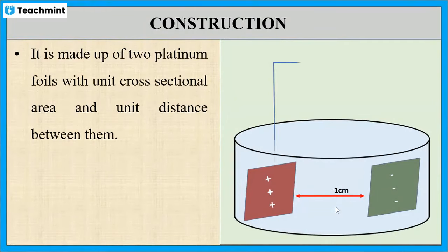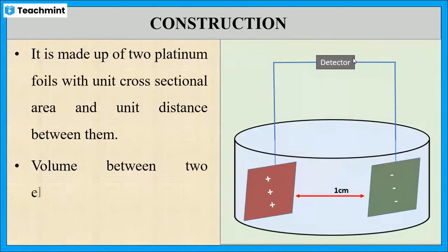These two platinum plates are connected to the detector. The volume between the two electrodes is one cubic centimeter, because the area of each plate is one square centimeter and the distance between the two electrodes is one centimeter.